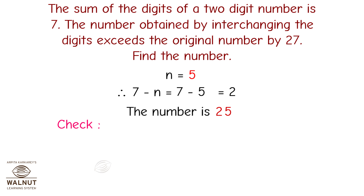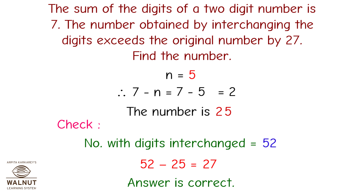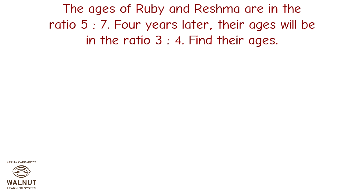Let's check the answer. The number with digits interchanged is 52. 52 minus 25 equals 27. Therefore our answer is correct.